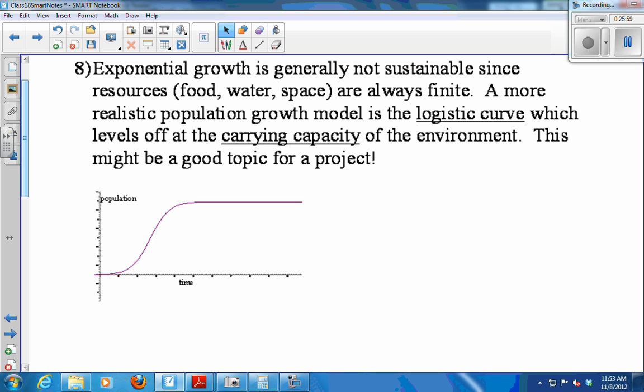Exponential growth is not generally sustainable because it is really powerful. Exponential growth causes things to grow really, really fast. We've seen it in several examples. Populations get really big when they're experiencing exponential growth. But it's generally not sustainable because resources like food and water and space are finite. You can't just keep growing bigger and bigger and bigger forever. So a more realistic population growth model is called a logistic curve. And it starts off looking exponential. So this part is what exponential growth looks like. It's getting big really fast. But then it slows down and levels off at a value called the carrying capacity of the environment. And I'm not going to go into like the formula of logistic growth like we did for linear and exponential. But that might make a really good project if someone was interested in looking into logistic growth.